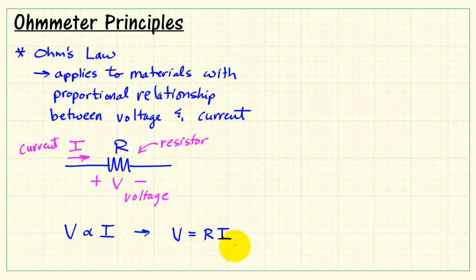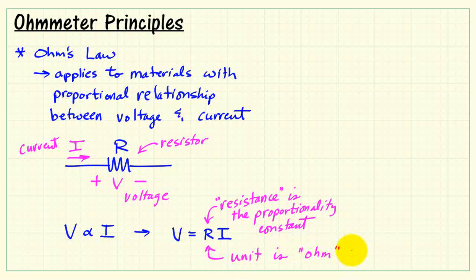And more specifically, we write that V equals R times I, where the resistance value is a proportionality constant. And the unit of resistance is called the Ohm.